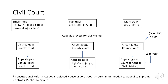For the appeals process for civil claims, you've got the district judge in a County Court, where appeals go to the circuit judge County Court. Then the circuit judge County Court, where appeals go to the High Court judge, and then appeals go to the Court of Appeal Civil Division. There is a leapfrog provision, where you hop one court in the hierarchy — this only occurs when there's over £50,000 in a High Court case.